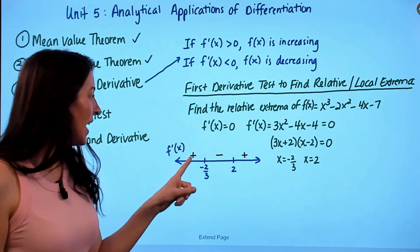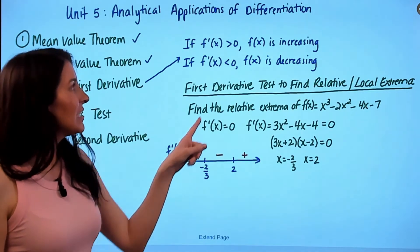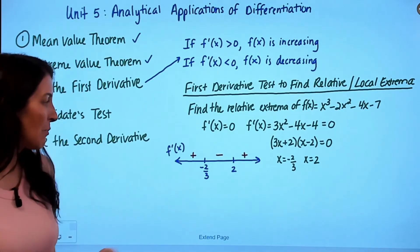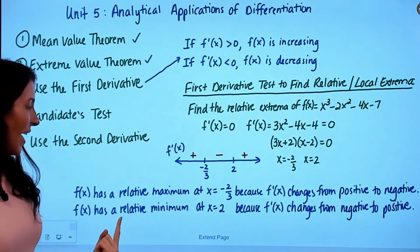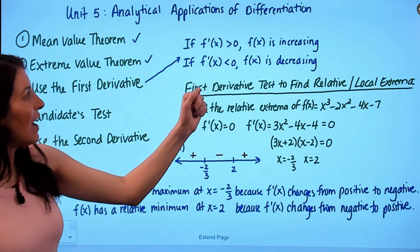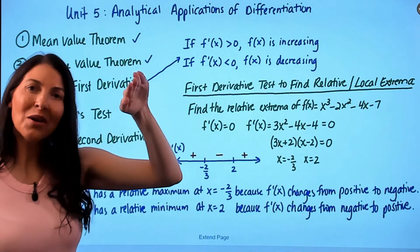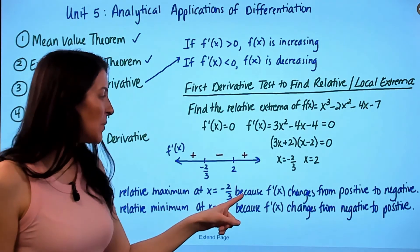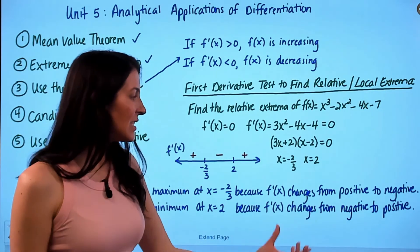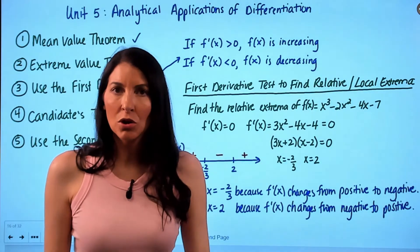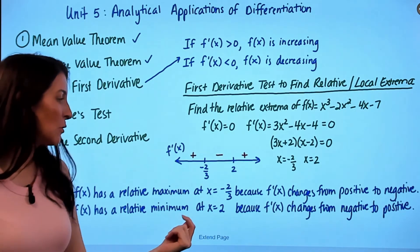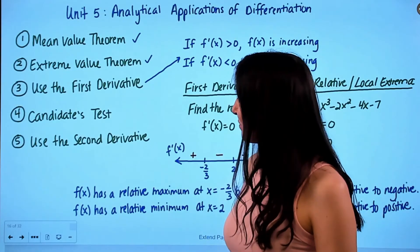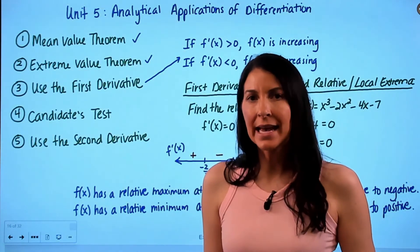Reading from the sign chart: where f'(x) changes from positive to negative, f(x) changes from increasing to decreasing, giving a relative maximum. Where f'(x) changes from negative to positive, f(x) changes from decreasing to increasing, giving a relative minimum. Therefore, f(x) has a relative maximum at x = -2/3 because f'(x) changes from positive to negative, and f(x) has a relative minimum at x = 2 because f'(x) changes from negative to positive.